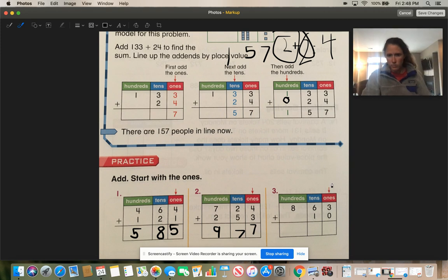Then number 3. The red arrow tells us to start in the ones place. Let's start. 3 plus 0 is 3. 6 plus 1 is 7. And 8 plus, I'm going to put a 0 here to help me, 8 plus 0 is 8. 873.